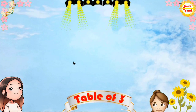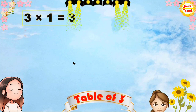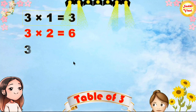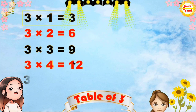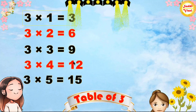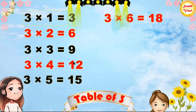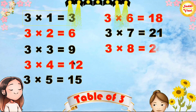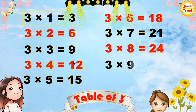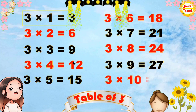Once again: 3×1=3, 3×2=6, 3×3=9, 3×4=12, 3×5=15, 3×6=18, 3×7=21, 3×8=24, 3×9=27, 3×10=30.